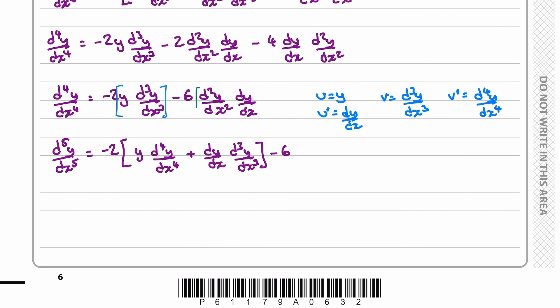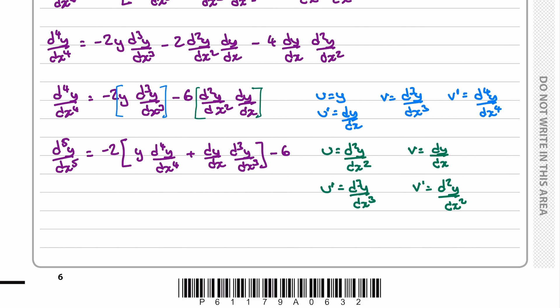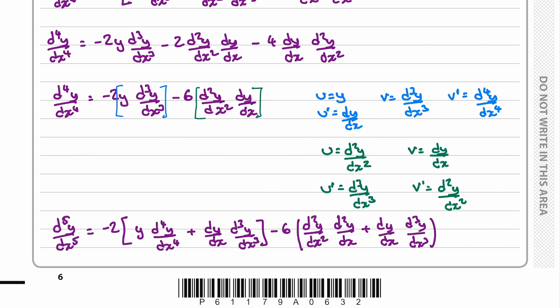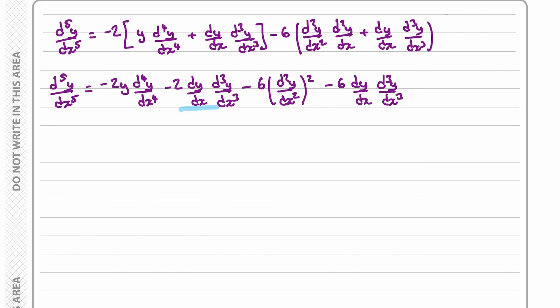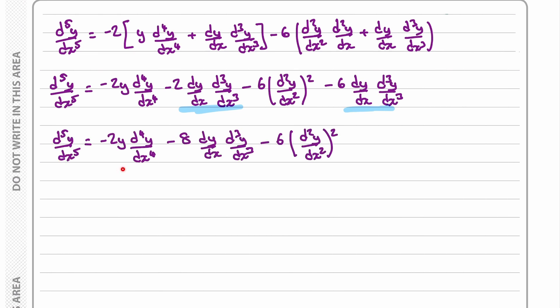We then use the product rule again on the green term — let that term equal u and differentiate it, and let the other term equal v and differentiate that. Substituting all of this in using the product rule and expanding the brackets, we can collect like terms, giving us the full expression for the fifth derivative.